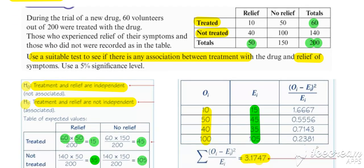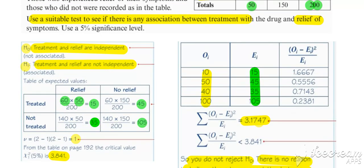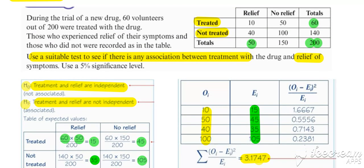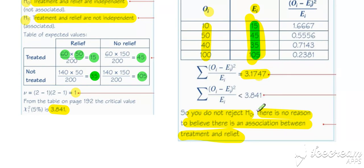That concludes all of our different types of chi-squared tests and goodness-of-fit tests. There are similarities between each of them, but the way we establish our expected values depends on the nature of the original distribution. In this most recent example we used the contingency table approach. But once we've got our observed and expected values, the goodness-of-fit or chi-squared hypothesis test plays out in the same way each time.